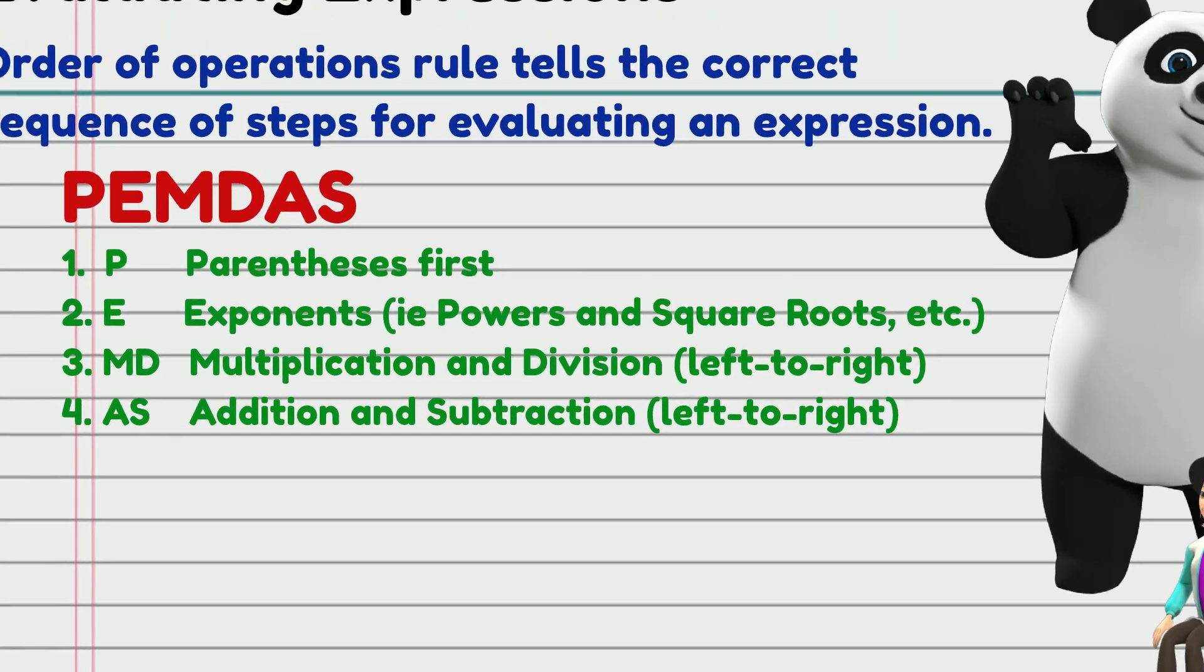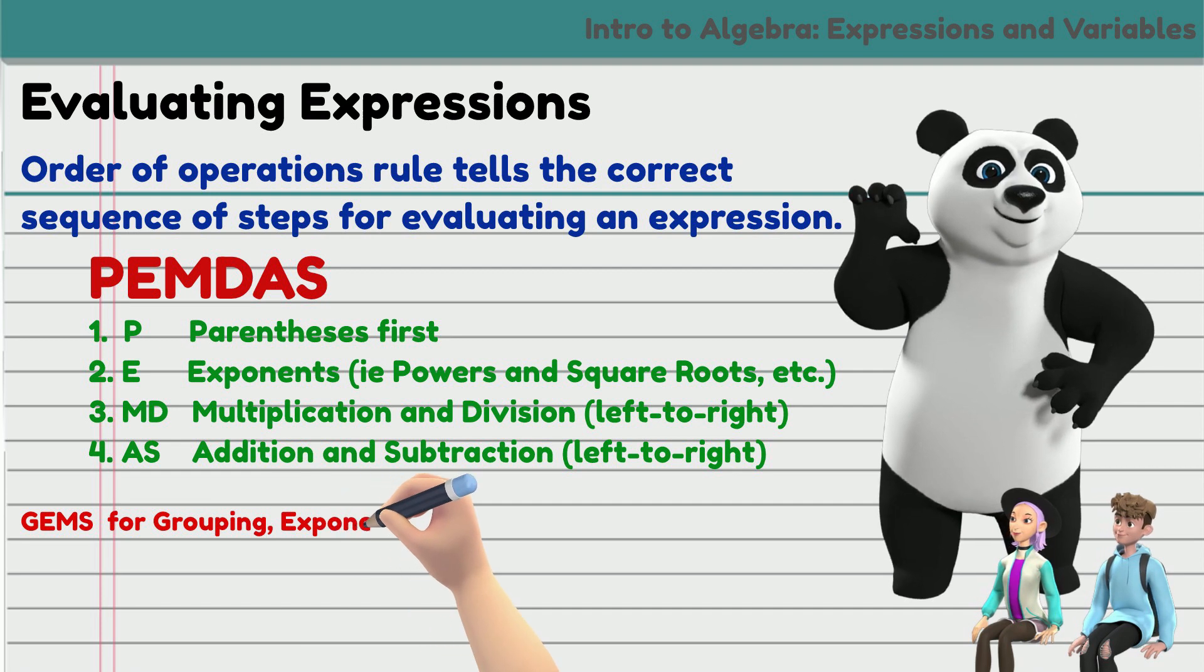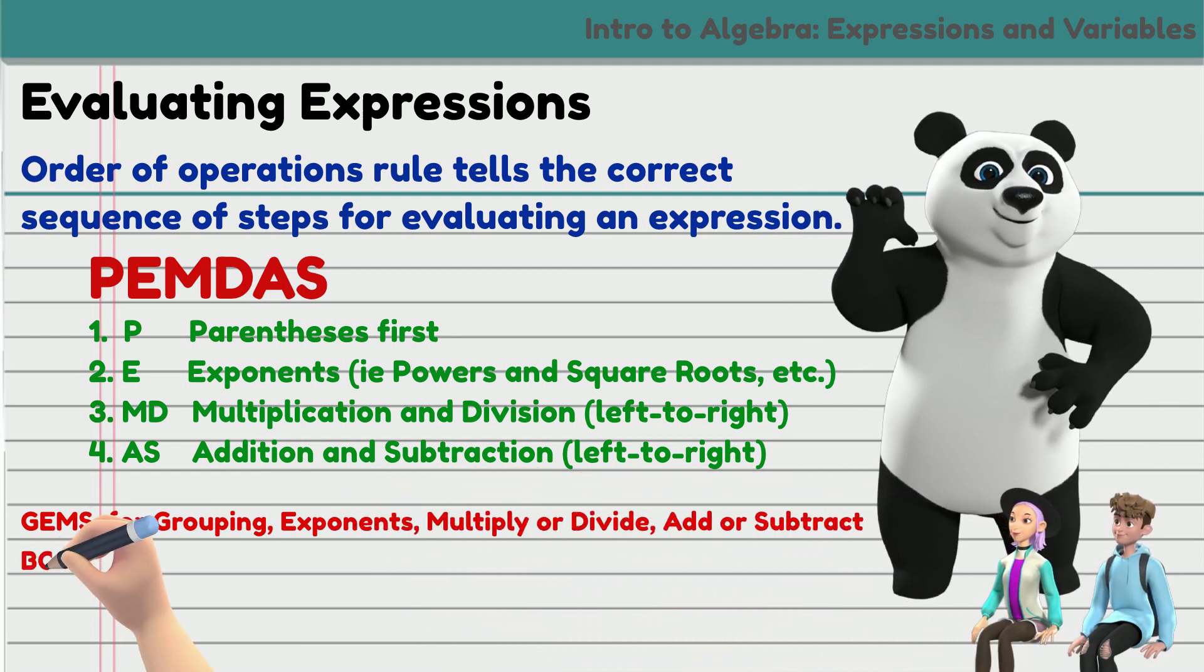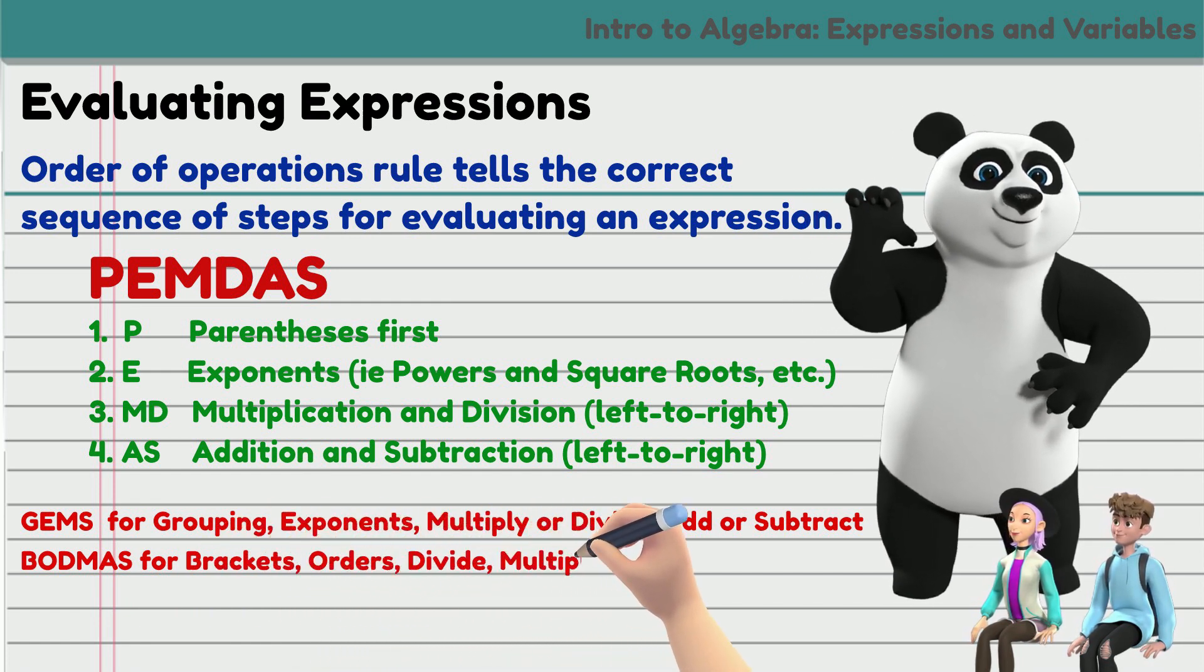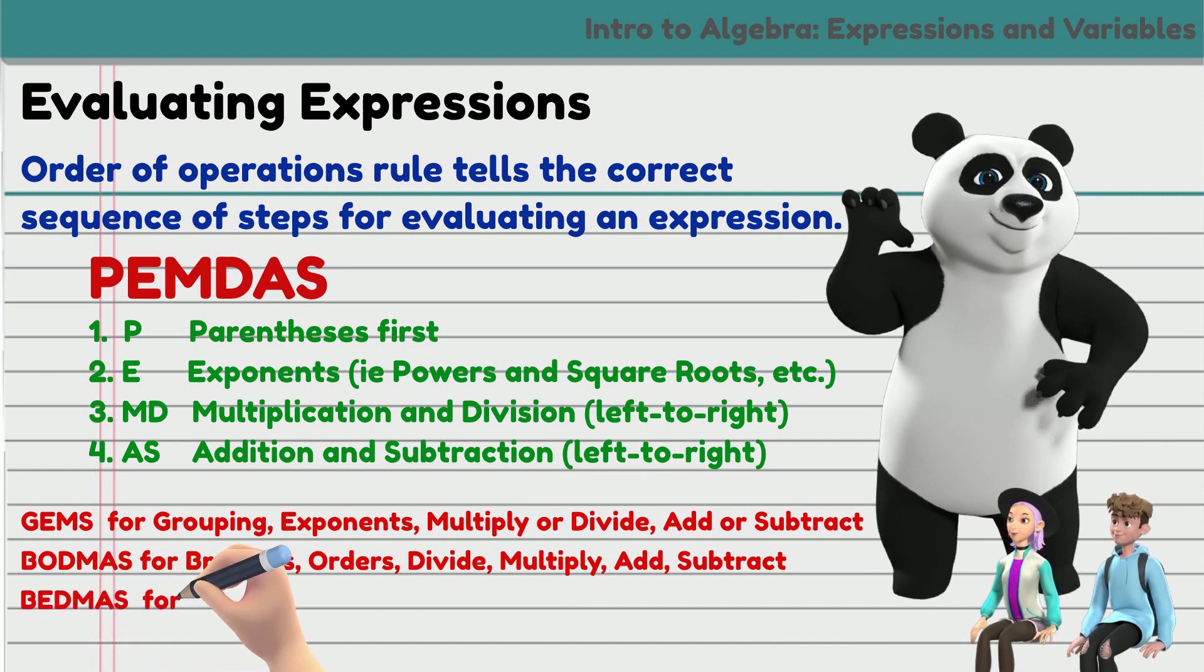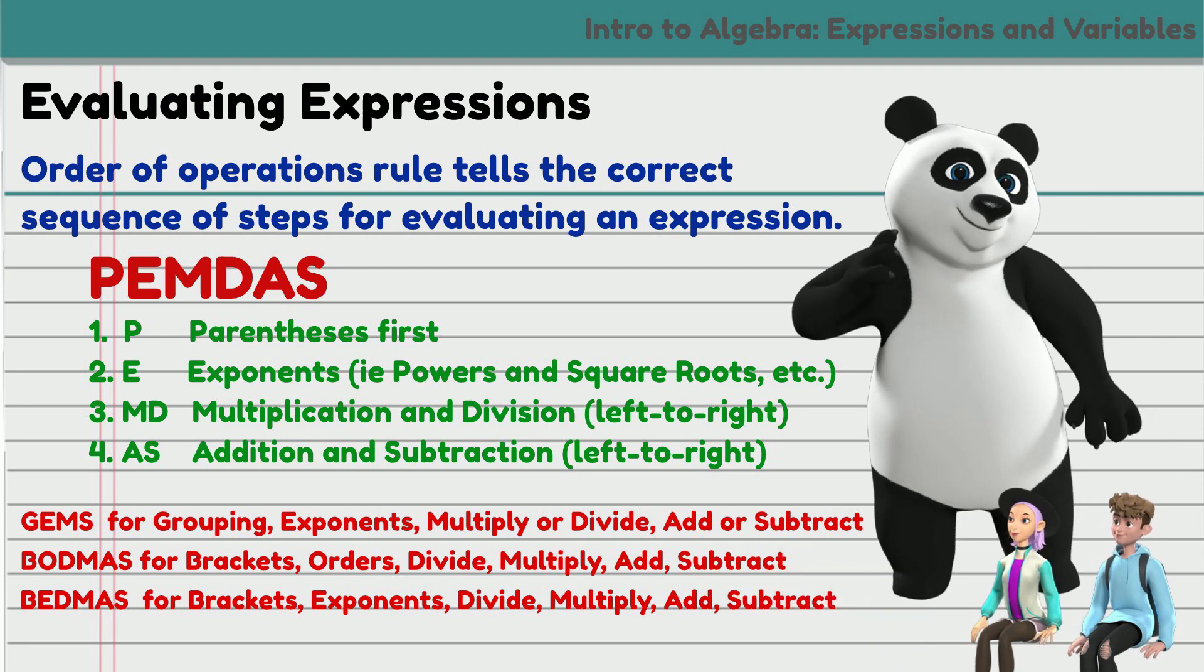In other parts of the world, some call it differently. Some may prefer GEMS for grouping, exponents, multiply or divide, add or subtract. In the UK, they say BODMAS for brackets, orders, divide, multiply, add, subtract. In Canada, they say BEDMAS for brackets, exponents, divide, multiply, add, subtract.